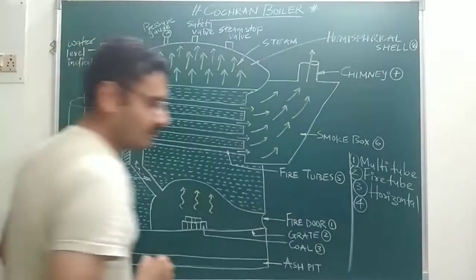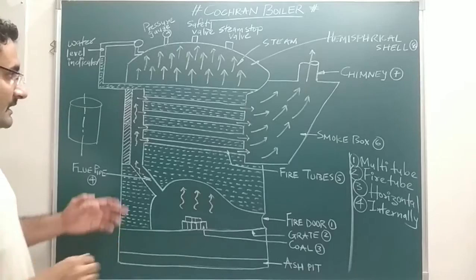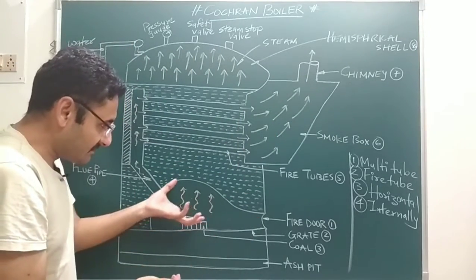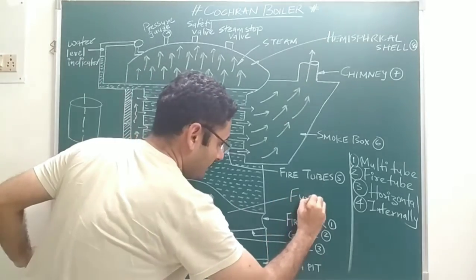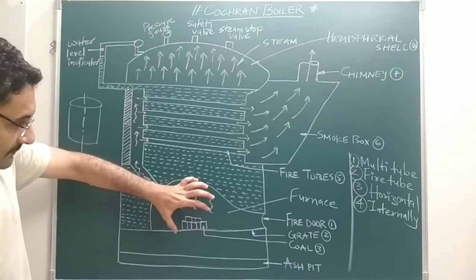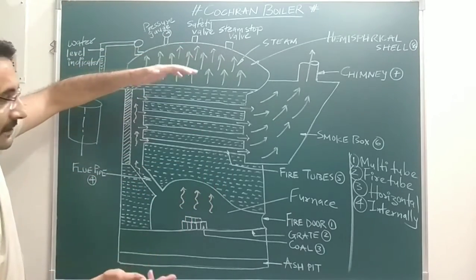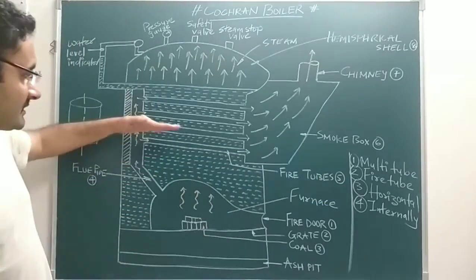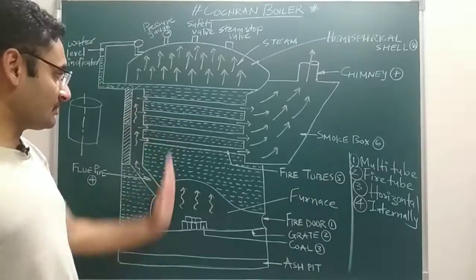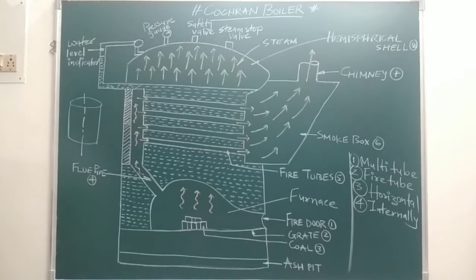Next point: it is also known as an internally fired boiler. It is called internally fired because inside the shell of the boiler, there is a furnace, and inside that furnace, combustion is taking place. Since the furnace is present inside the shell, combustion takes place inside the shell — that is why it is known as an internally fired boiler. So the four basic characteristics are: multi-tube, fire tube, horizontal axis, and internally fired boiler.